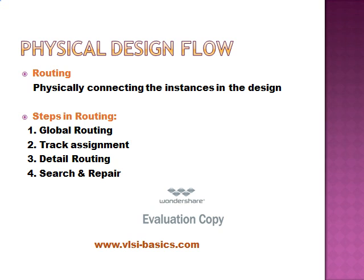Global Routing also avoids pre-routed foreground placement blockages and routing blockages. The second step in routing is Track Assignment. It assigns each net to a specific track and actual metal traces are laid down by it. It tries to make long straight traces to minimize the number of vias. DRC is not followed in the Track Assignment stage, and Track Assignment operates on the entire design at once.